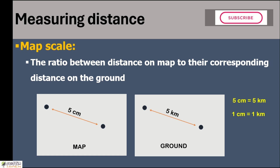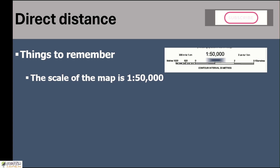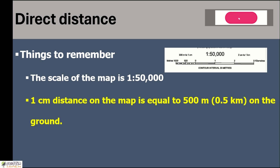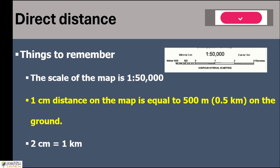All maps are prepared on a certain map scale. For the maps we are going to use, the map scale is 1 is to 50,000. Both sets of maps are in the same scale: 1 is to 50,000, which means 1 centimeter on the map equals 500 meters or 0.5 kilometers on the ground. Otherwise, 2 centimeters on the map equals 1 kilometer on the ground.